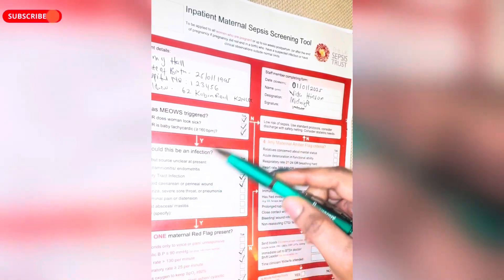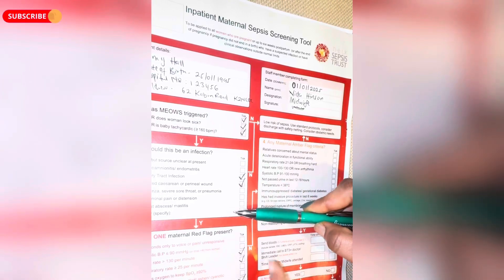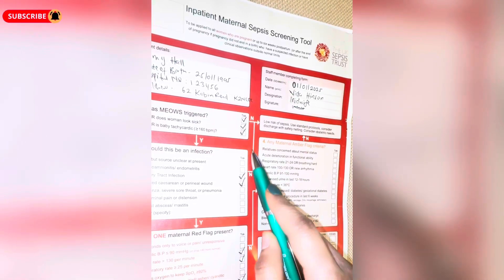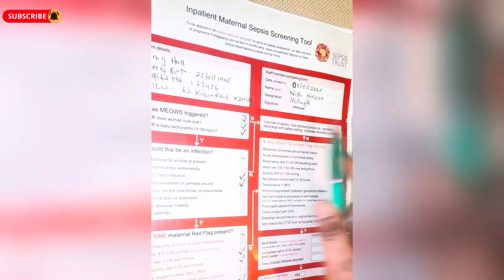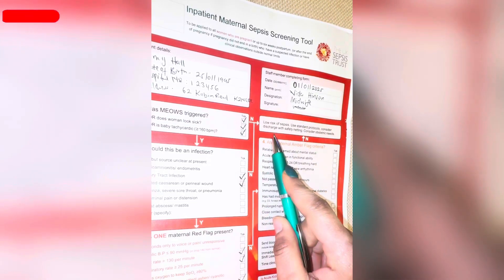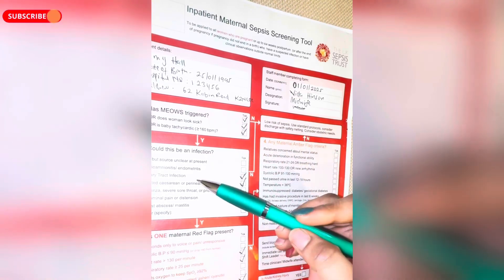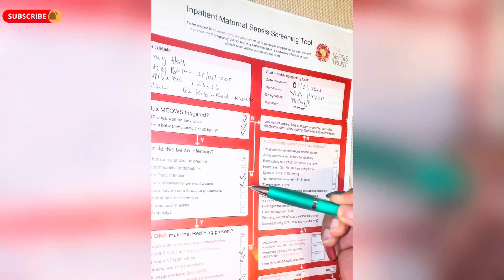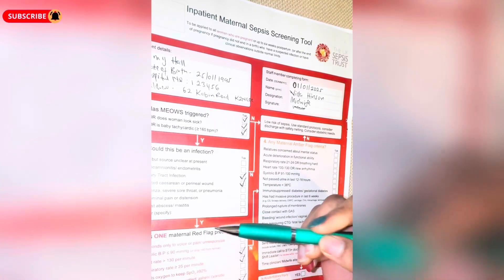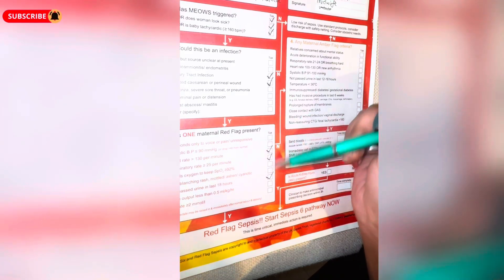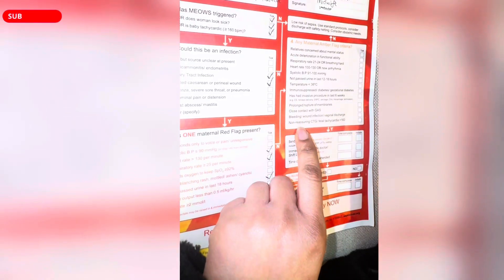If you're working in the hospital and the woman triggered MEOWS but the infection box had nothing ticked — meaning no — the arrow for no points to low risk of sepsis: use standard protocols, consider discharge, safety netting, and obstetric needs. If Parameter 2 was yes but Parameter 3 — one maternal red flag — was no, the arrow points to Parameter 4: any maternal amber flag criteria present.